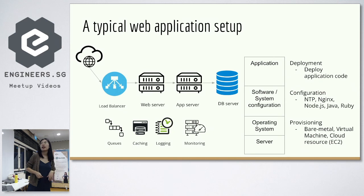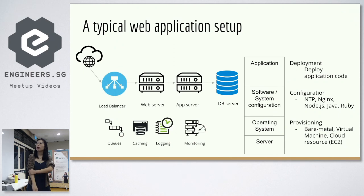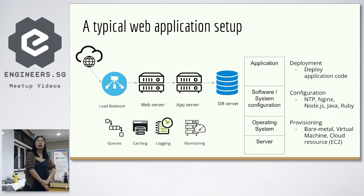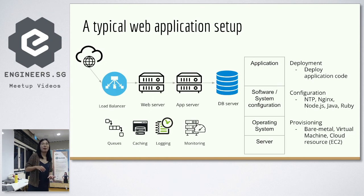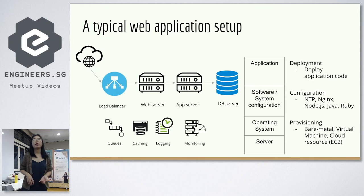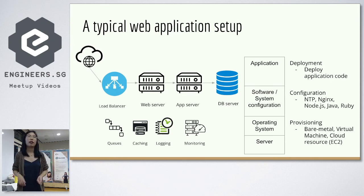Before, things were done manually. Take the configuration as an example: if we want to configure the NTP service, this usually requires connecting to the server remotely one by one, then modifying the NTP configuration file and restarting the NTP service. It sounds like a trivial task, but imagine you have many, many servers to do, and some applications require a lot of configuration. Doing all this the manual way involves a lot of steps and is also error-prone. That's why we need to use IAC to automate this process.